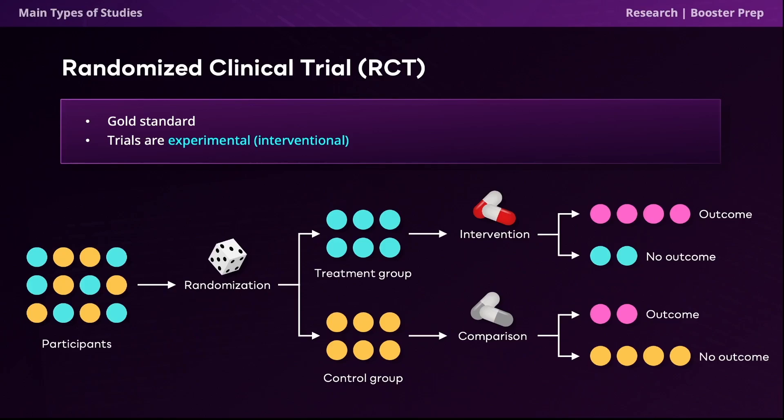In this graphic, the intervention group received the colored intervention pills, while the control group received the gray pills indicating a placebo treatment. Placebo treatments are considered inert or sham treatments that allow for control group comparison and help maintain blinding so that participants — and sometimes researchers in the case of double-blinded studies — don't know who received which treatment.